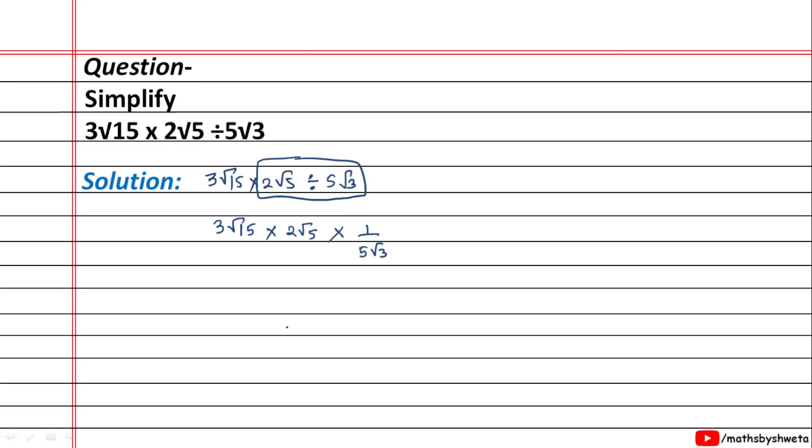So 1 upon 5√3. Now multiply these two numbers: 3 into 2 is 6, root 15 into root 5 means root 75, divided by 5√3.